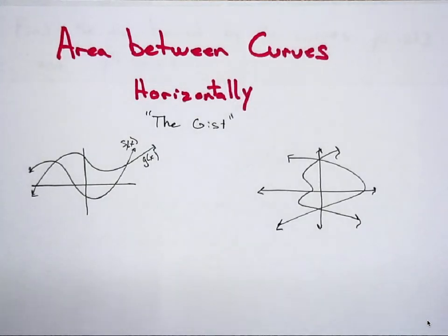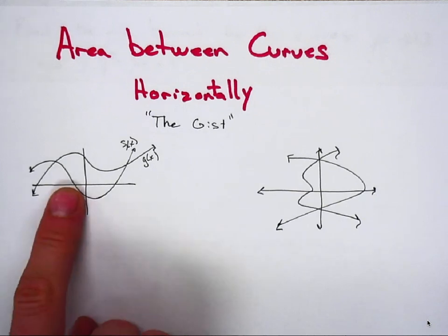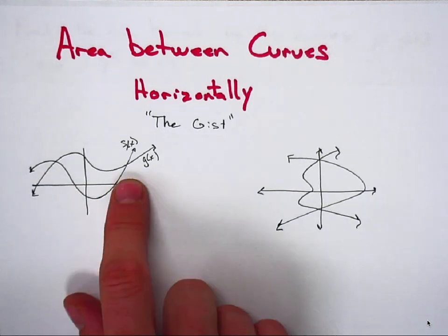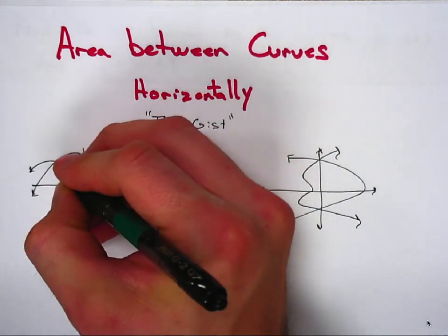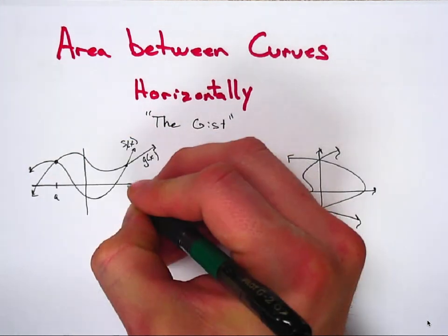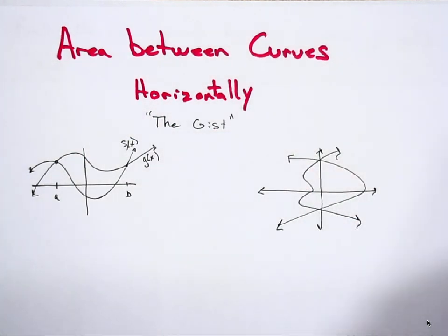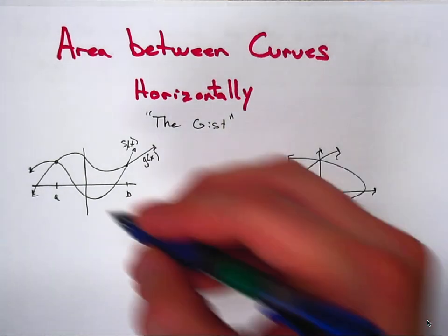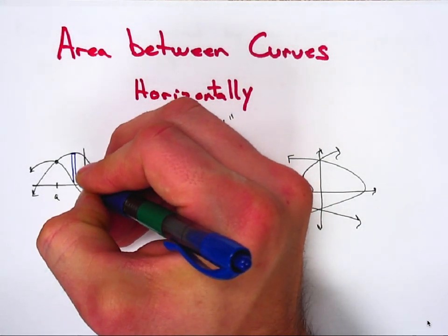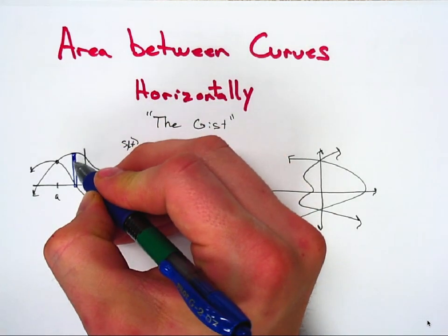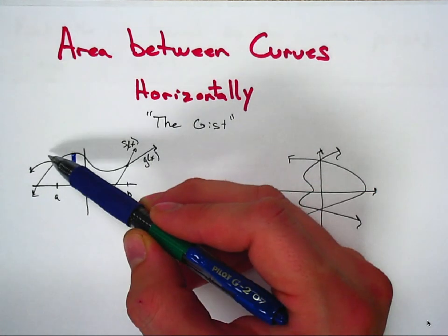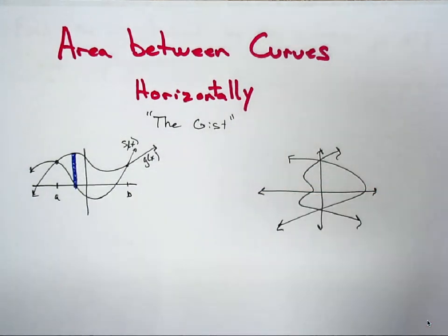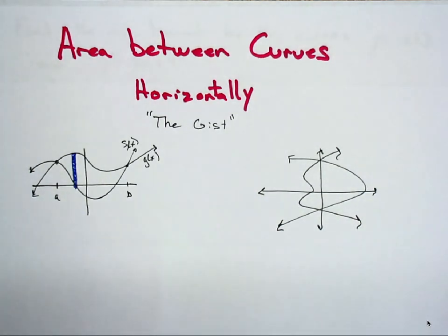The gist of what's going on: this is the sort of example we've done so far. You have two functions being graphed, and you have this area of the region between these two curves. You find the intersection points, you have your a value and your b value. You chop it up into different cross sections, and I like to draw a sample rectangle because that reminds us what the greater curve is and what the lesser curve is. In this case, g of x would be the greater curve, f of x would be the lesser curve. That's what we did yesterday — you integrate that difference.